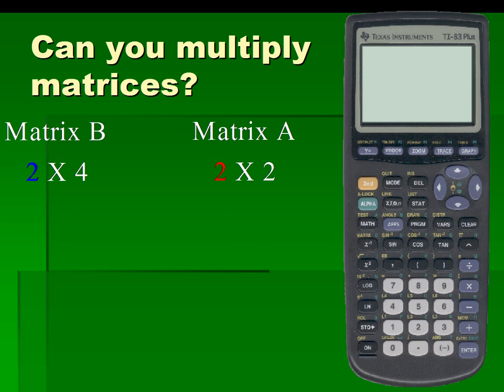If we look at the product of matrix B times matrix A, we see that matrix B has 4 columns and matrix A has 2 rows, which do not match. Therefore, we cannot multiply matrix B times matrix A.